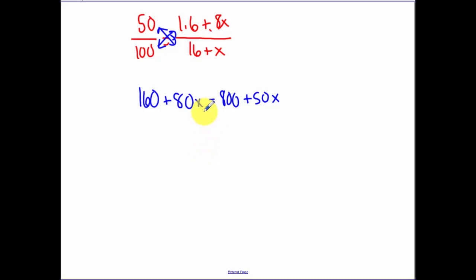Now it's just a matter of solving. Subtract the 160 over, we get 640. Subtract the 50 over, we get 30x. So x is going to equal 21 and 1/3 ounces.